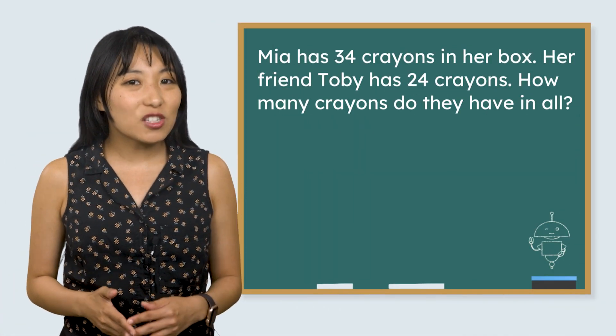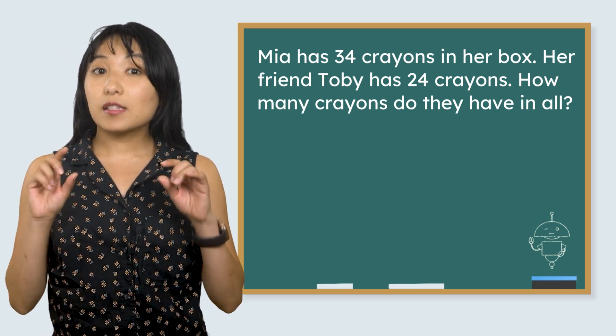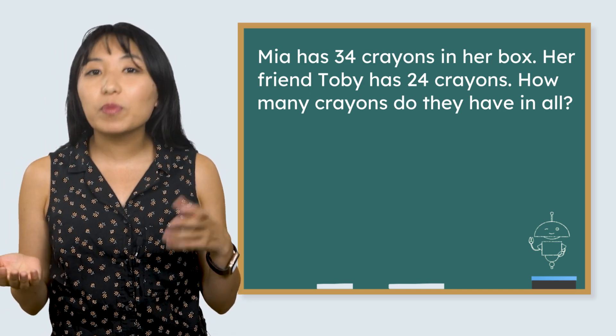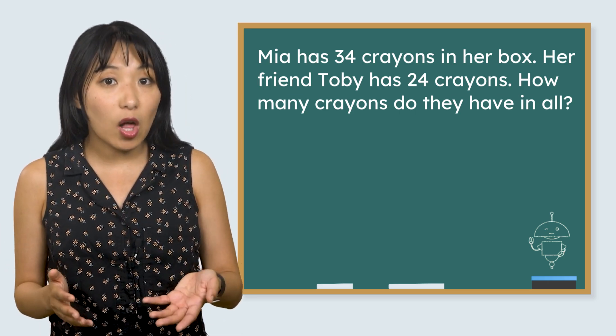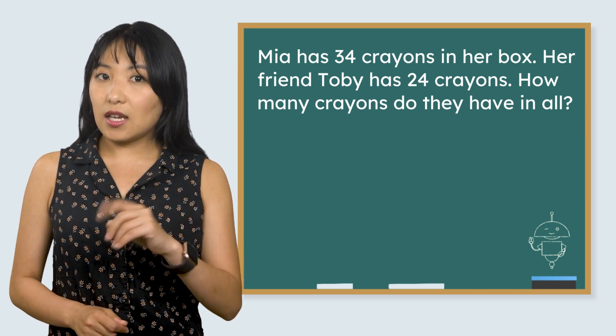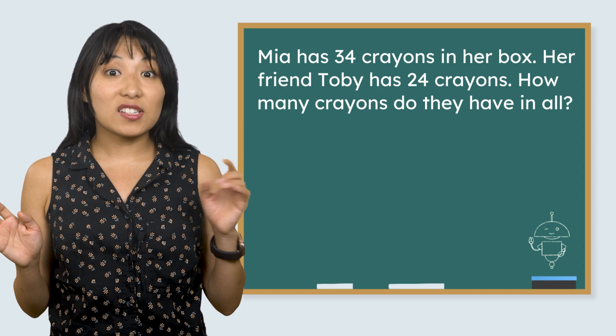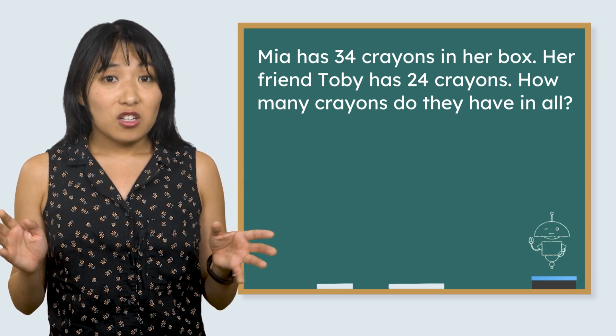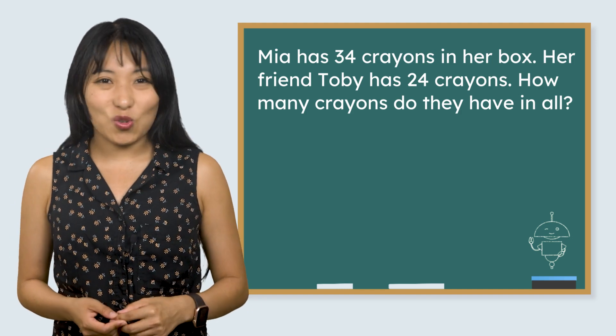We're definitely going to learn something new today. When we add smaller numbers like 12 plus 5, we can draw a quick picture, use snap cubes, base 10 blocks, or even our number line to find the answer. But in today's math mystery, we're adding 34 plus 24. We're adding two digit numbers together, which means we need a new strategy. Check this out.